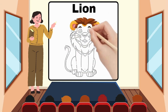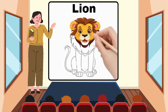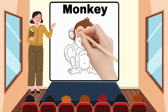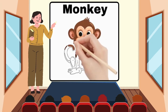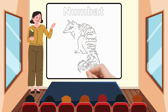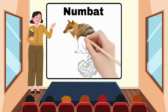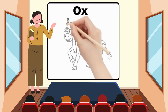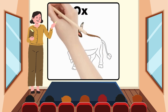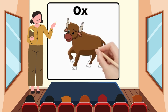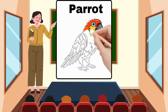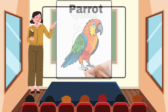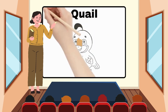L for Lion. M for Monkey. N for Numbat. O for Ox. P for Parrot. Q for Quail.